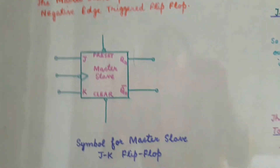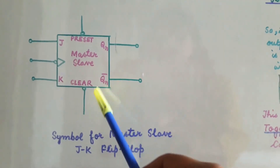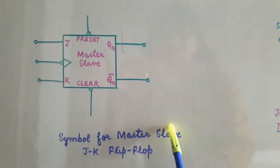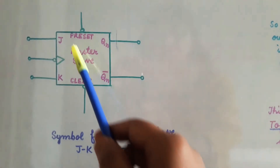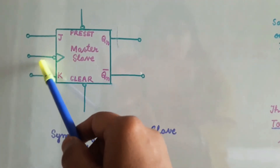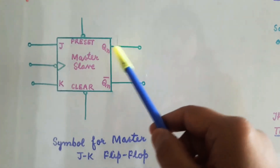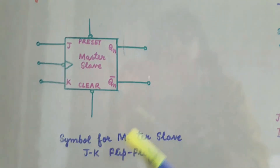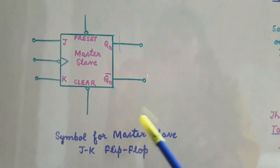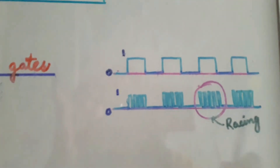Now let us see the symbol of the master-slave JK flip-flop. As you can see in this figure, there are three inputs: J, K, and clock. This clock is negative edge triggered. The two outputs are Qn and Qn-bar. There are also preset and clear inputs. This is the symbol for the master-slave JK flip-flop.